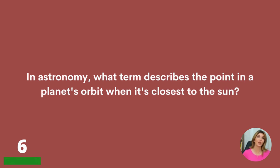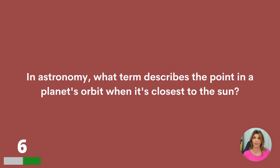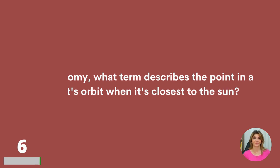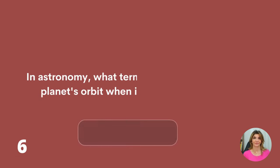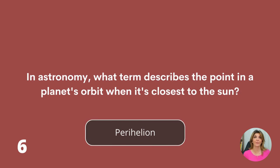In astronomy, what term describes the point in a planet's orbit when it is closest to the Sun? No multiple choice here. Perihelion.